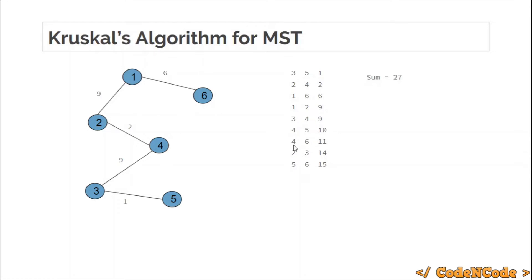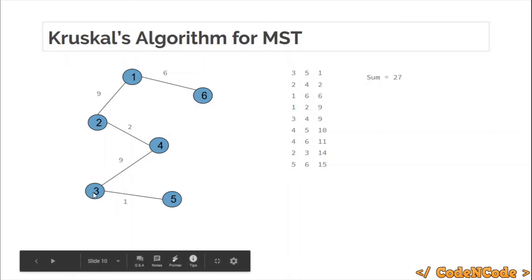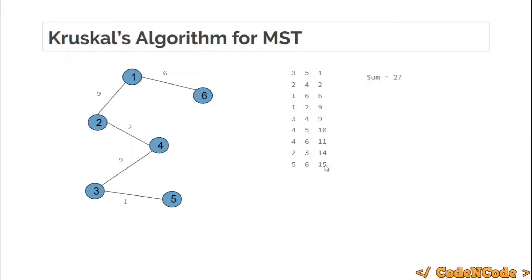The same logic applies to nodes 4 and 6 — since 4 and 6 are already connected, adding that edge with weight 11 would just create a cycle that we'd have to remove. And nodes 2 and 3 are also already connected, so that edge is skipped as well. Finally, our MST has a total sum of 27, and we return the sum 27.